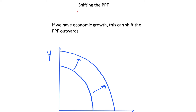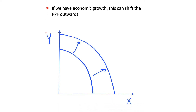In this video I'm going to be discussing ways in which the PPF, or production possibility frontier, may be shifted. This should be quite simple — we're going to think about how economic growth can shift the PPF outwards, as shown on this diagram. I'll also go over where the PPF could shift inwards with economic contraction, and we may also have different kinds of shifts.